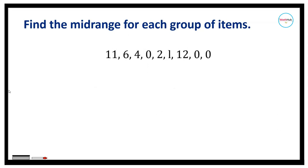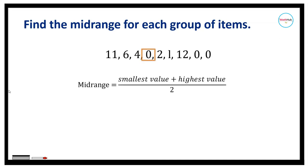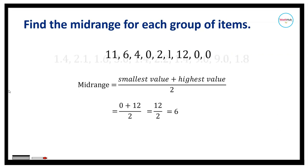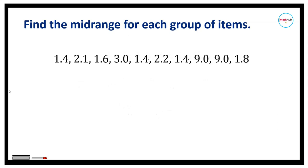For number two, to compute the mid-range, let us first identify the lowest data value, which is 0, and add that to the highest data value, which is 12, then divide by 2. So 0 plus 12 is 12, divided by 2 is equal to 6.